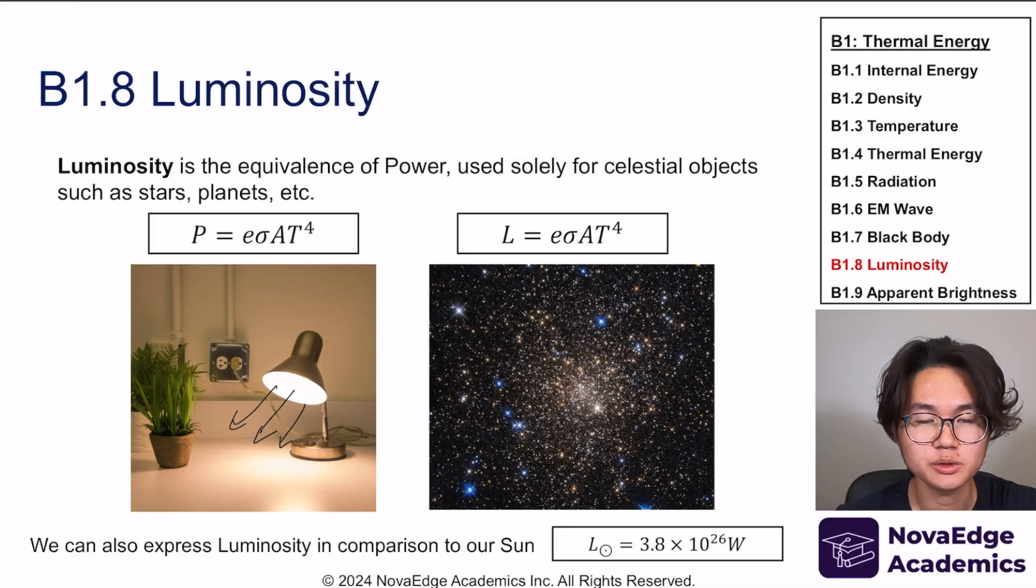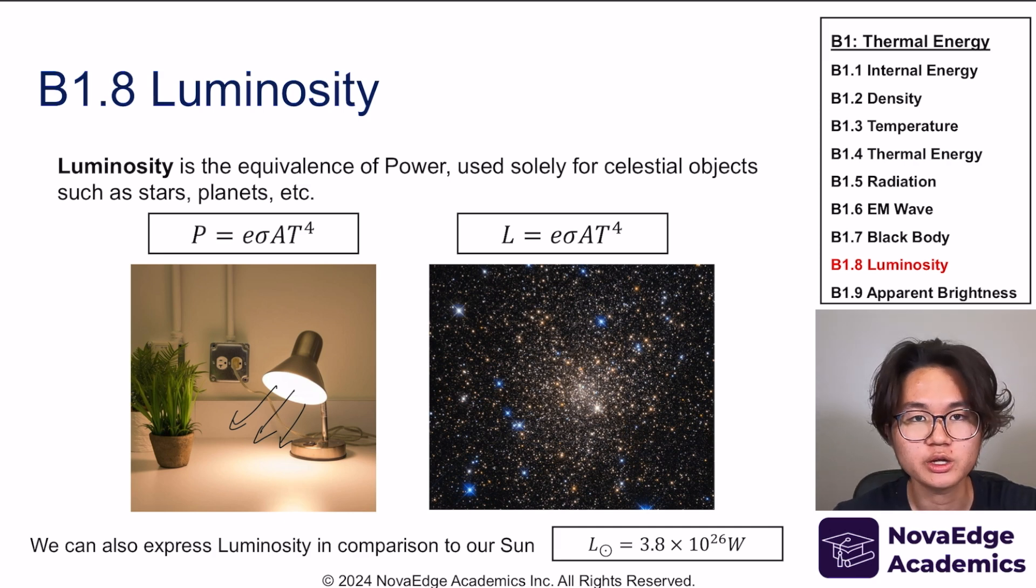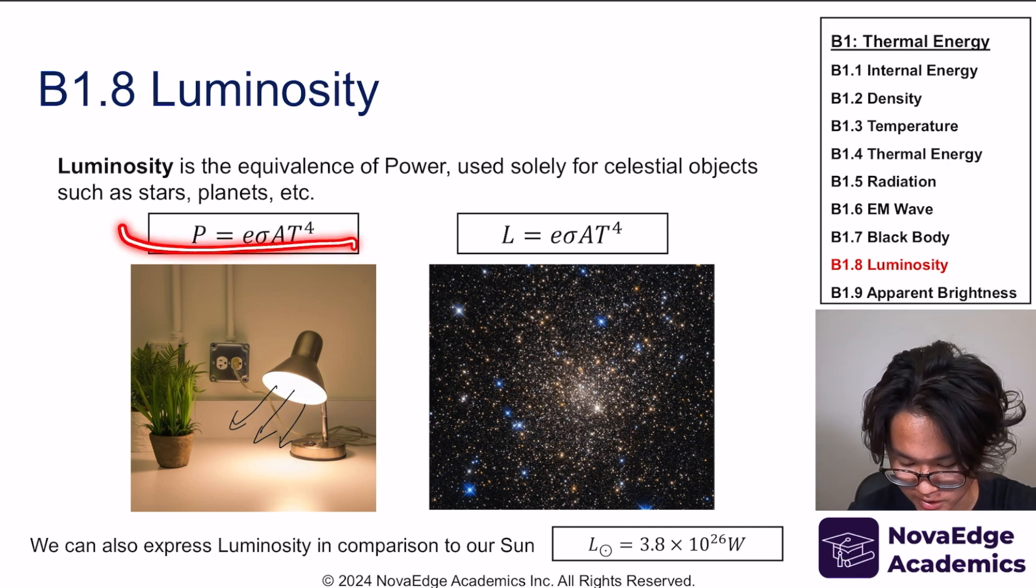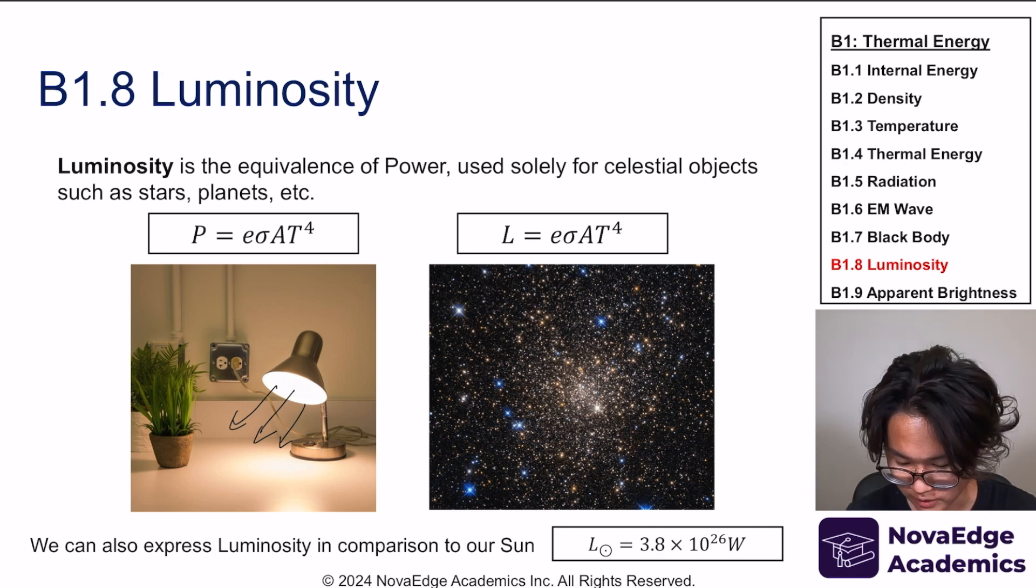Hey guys, my name is Hiraku Murakami. I'm here with NovaEdge Academics and today we're continuing with topic B2, part 3 of thermal energy. First, we're going to start off with luminosity. Just to recap, we've talked about power, specifically power of radiation, and power is expressed as this equation. This can be used for the sun, for light like a lamp. Luminosity is the same thing as power, expressed in the same equation, but we use it for the context of celestial objects.